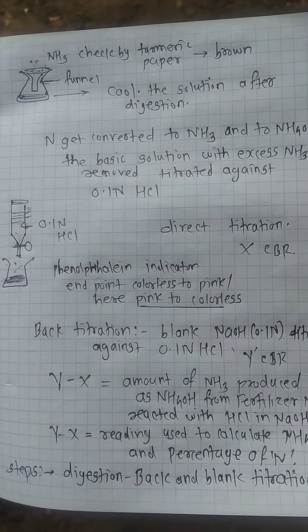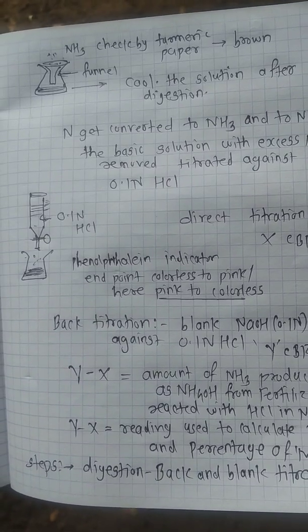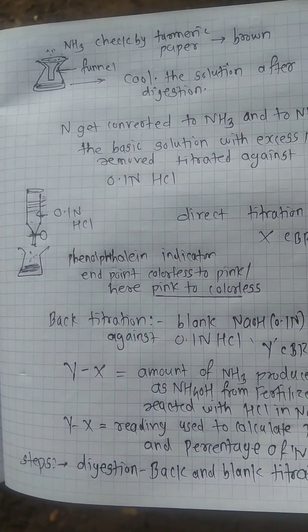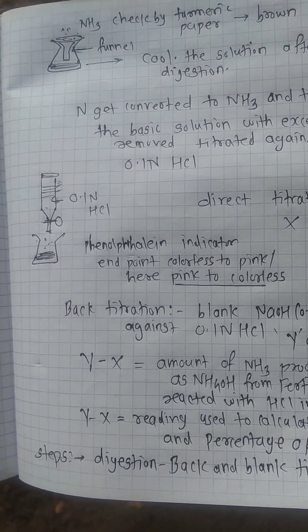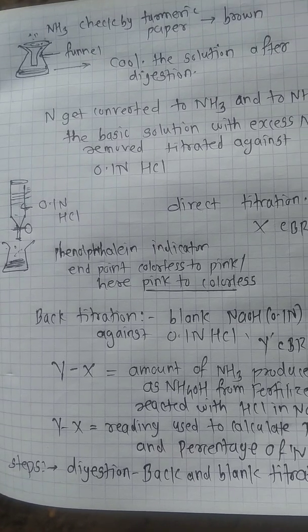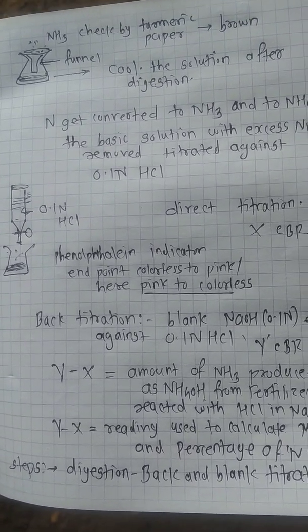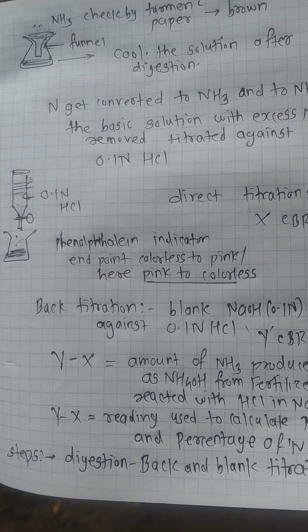In the direct titration, reading is X, constant burette reading. That sample solution diluted is titrated against 0.1 normal HCl solution using phenolphthalein indicator, and endpoint is pink to colorless as HCl is in the burette and basic solution is in the flask, that converted nitrogen ammonia solution as ammonium hydroxide.